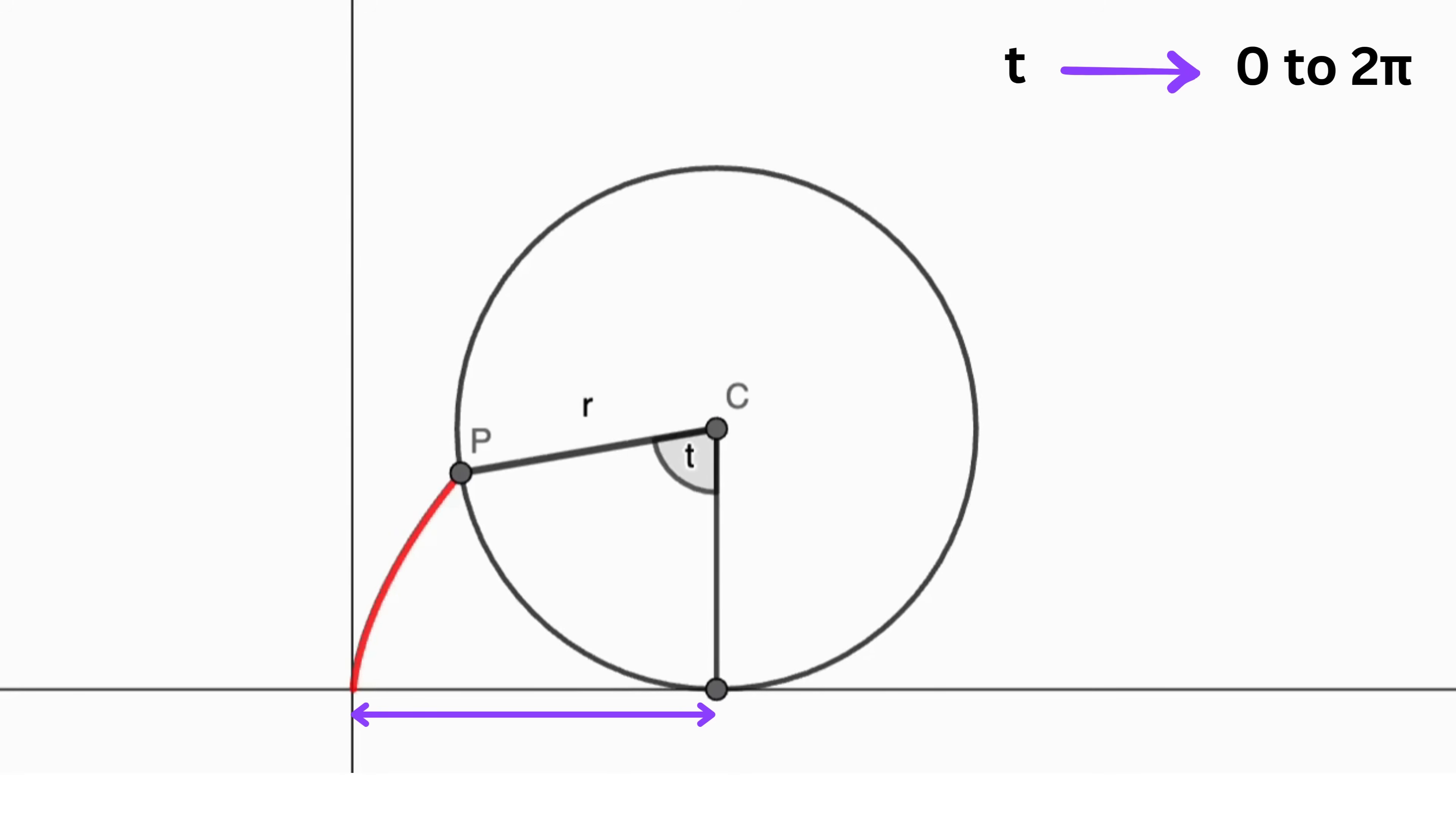When the circle rotates through an angle of T, the length of the arc that has been unwound is calculated as the radius R times the angle T, based on the arc length formula.